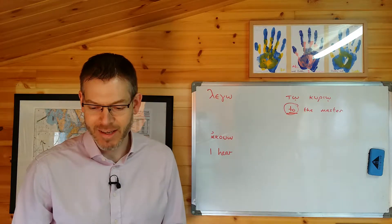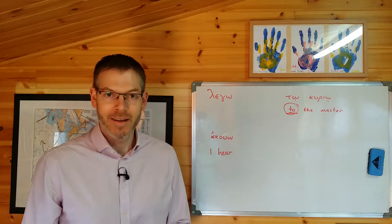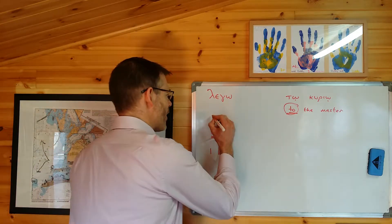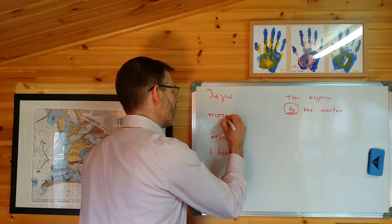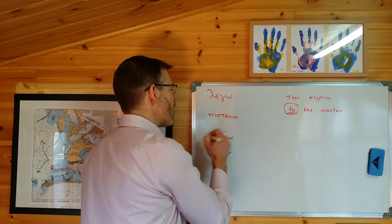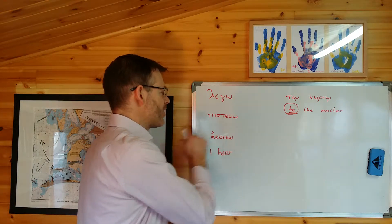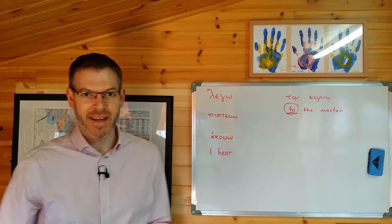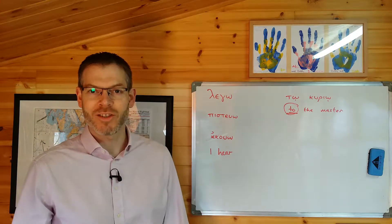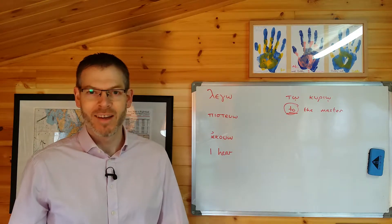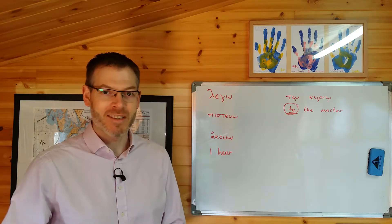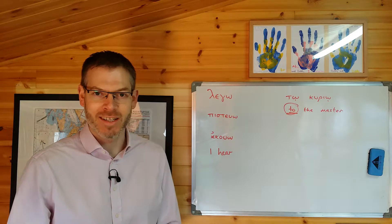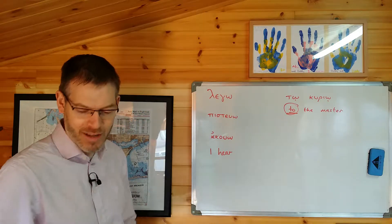The second example he gives is the verb pistuo — I believe. The object of pistuo goes in the dative case. For now, I suggest you just remember that. Don't try and think about it or rationalise it too much. There is a rationalisation for it, but we don't need to worry about it here.